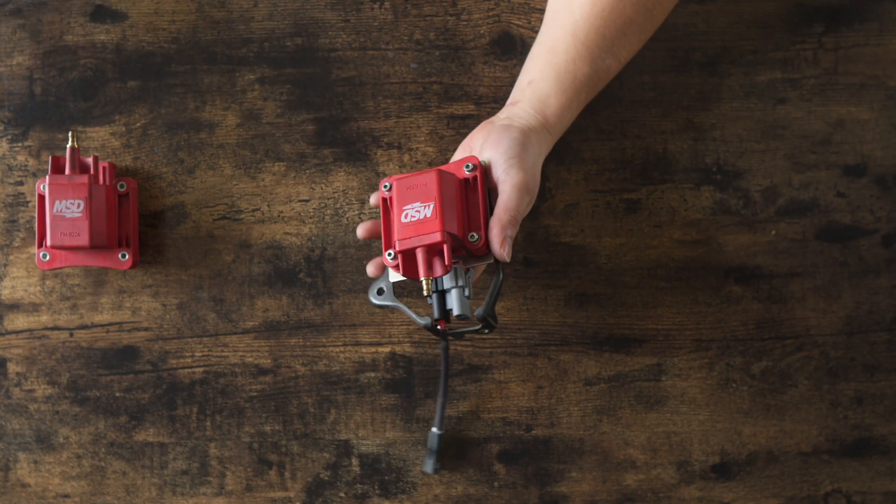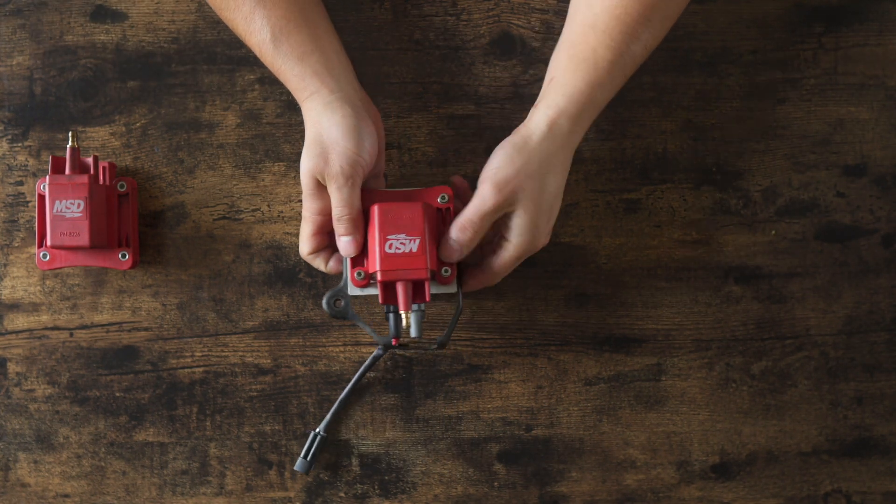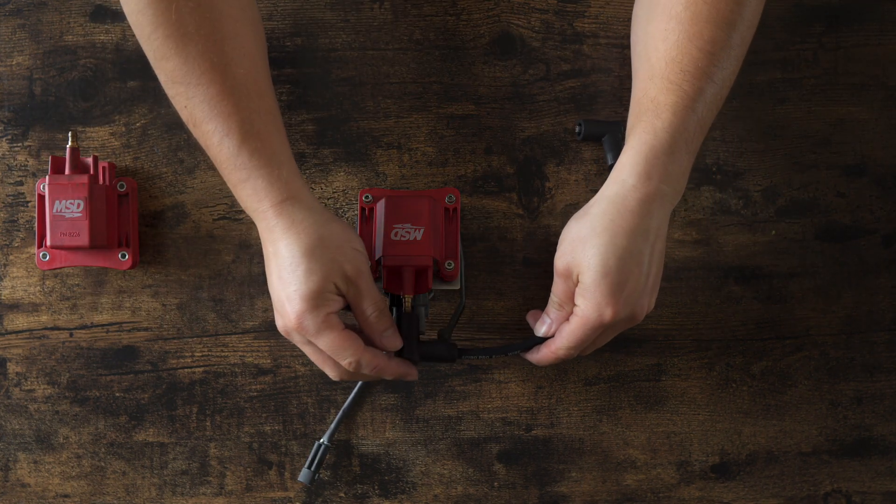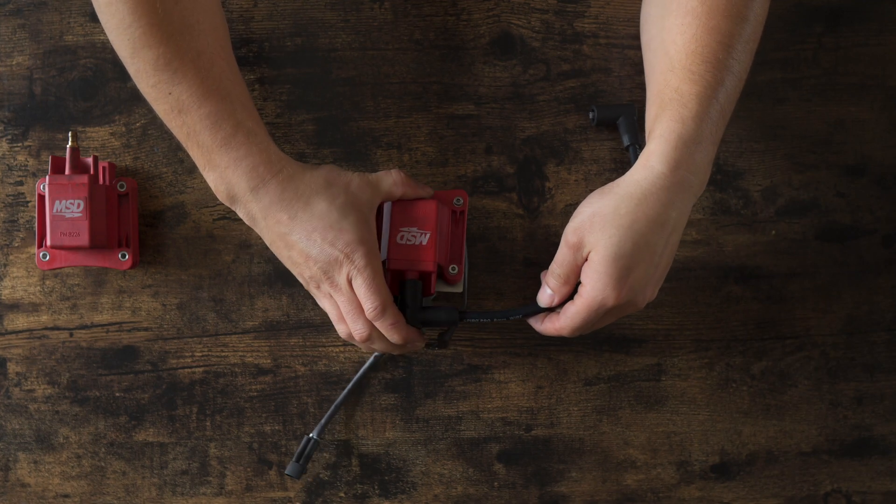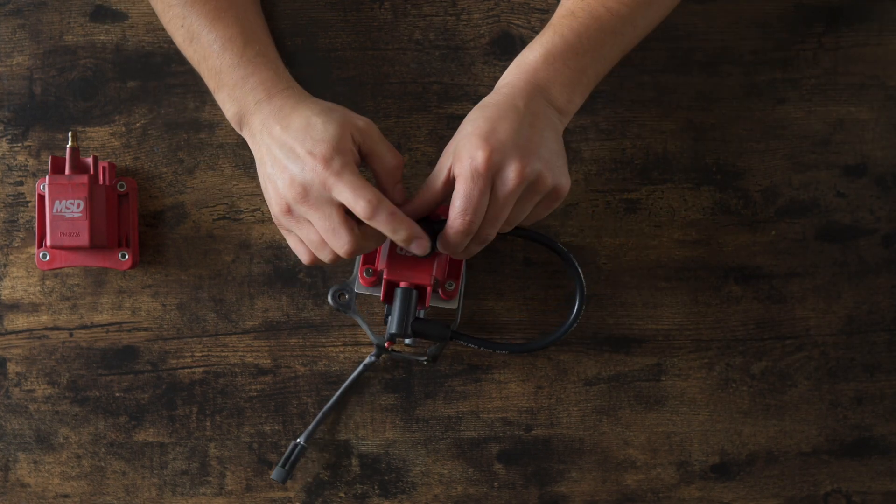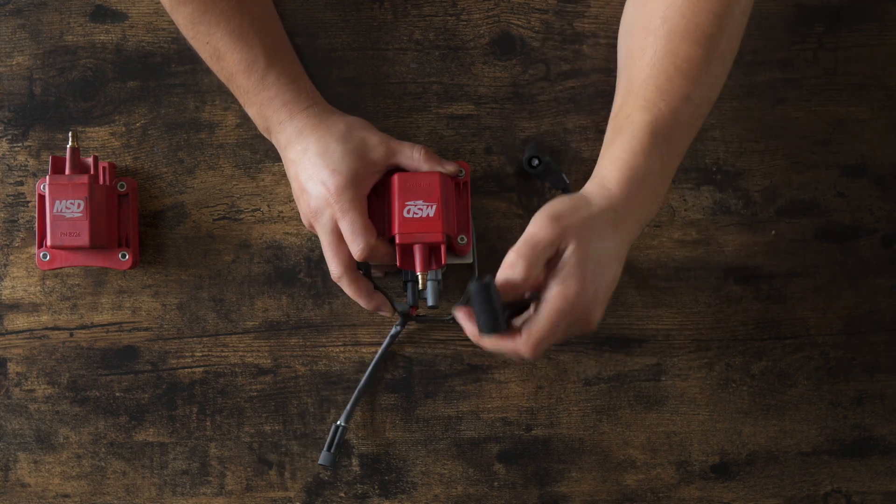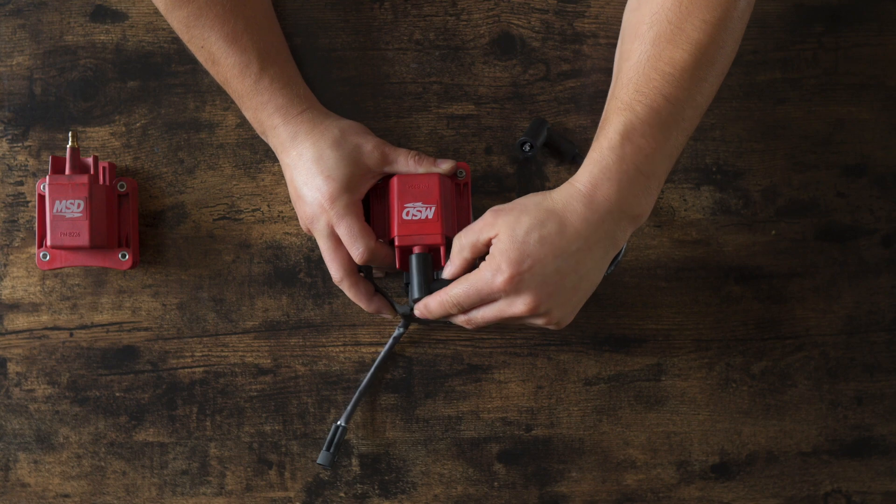Okay, and that's how it looks like installed, and we will take one of the spark plug wires. It doesn't matter for the first generation kit, but there's one side that is male. There's one side that's female. What's female is going to go onto the male end of the MSD kit.